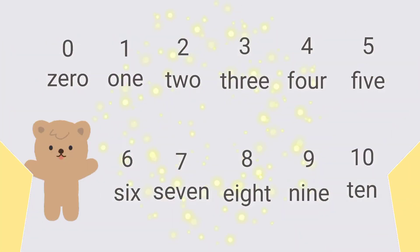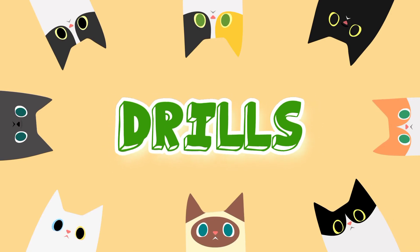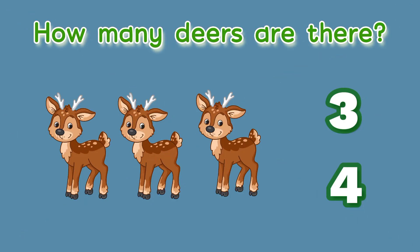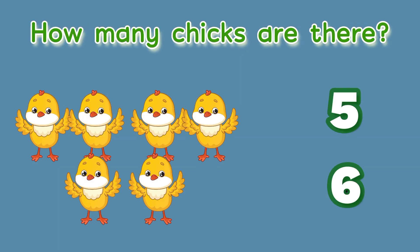Now let's have drills. Can you tell how many animals are there? Let's go. How many deers are there? Right — three deers. How many chicks are there? Correct — six.